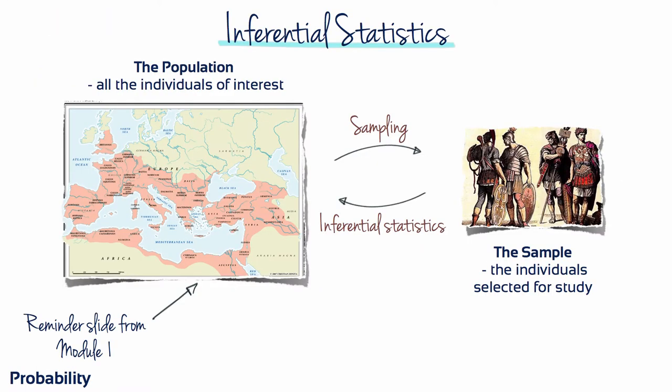In Module 1, we introduced the idea that research studies begin with a general question about an entire population, but the actual research is conducted using a sample. In this situation, the role of inferential statistics is to use the sample data as the basis for answering questions about the population. To accomplish this goal, inferential procedures are typically built around the concept of probability.